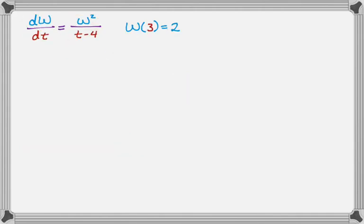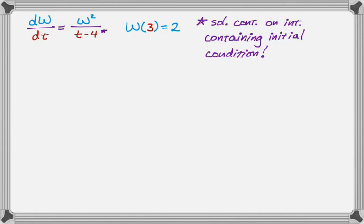Let's take a look at another example. We have dw/dt equal to w squared over (t minus 4), and we know that w of 3 equals 2. I noticed something in this problem right away: there is a t minus 4 in the denominator, which has a discontinuity — t cannot equal 4. So we need to think about what it means for something to be the solution to a differential equation. The solution must be a function that is continuous on an interval containing the initial condition. Since there's a vertical asymptote at t equals 4, the domain of our solution will be either t less than 4 or t greater than 4, and we decide which based on the initial condition.